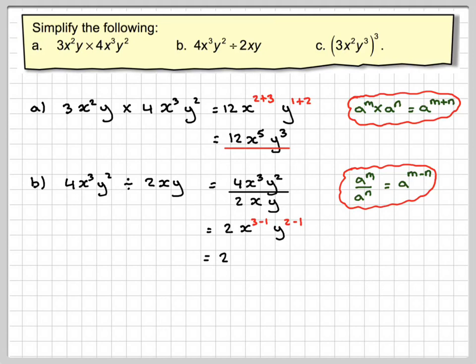So that's equal to 2x squared. And then y to the 2 minus 1 is going to be y. Don't bother writing the power of 1 in.